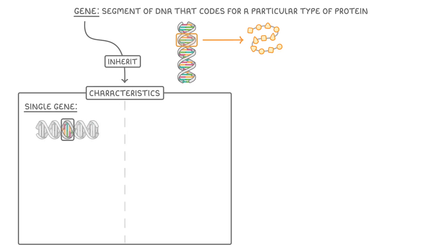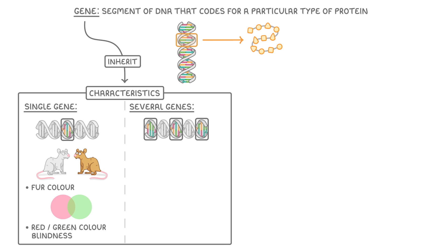Sometimes these traits are determined by a single gene, like the ones that code for fur color in mice and red-green color blindness in humans. More often though, our characteristics are determined by several different genes that interact with each other. For example, there are loads of genes that code for height, which is one of the reasons why we're all different sizes.